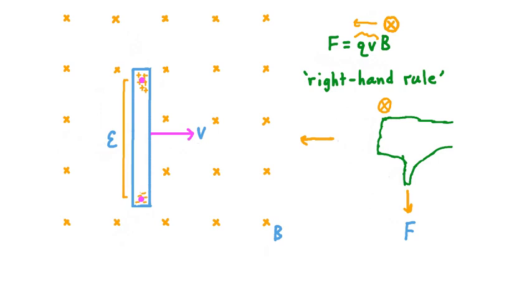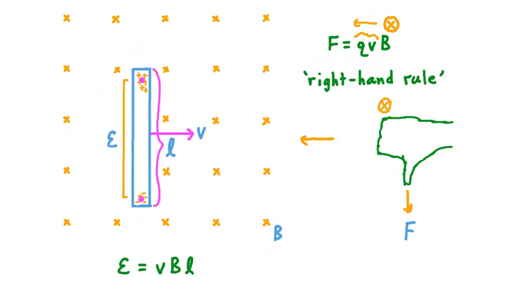The amount of EMF generated depends on physical parameters. If we take the speed with which our conductor is moving and multiply it by the strength of the magnetic field the conductor moves through, and then multiply that by the overall length of the conductor L, that product equals the EMF generated across the conductor. There are different ways to increase this value of EMF: make the conductor longer, make the magnetic field stronger, or move the conductor more quickly through the field.